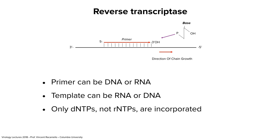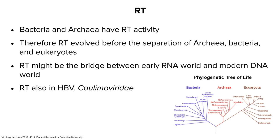Reverse transcriptase is a template-dependent enzyme that needs a primer — the primer can be RNA or DNA. The template is read in a 3' to 5' direction, and new bases are added in a 5' to 3' direction. The template can be RNA or DNA — not only does it copy RNA to DNA, it can also copy DNA to DNA, as you'll see in the reproduction scheme. Only dNTPs are incorporated; it does not make RNA.